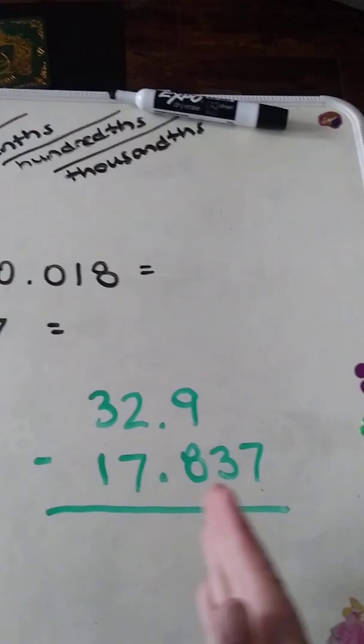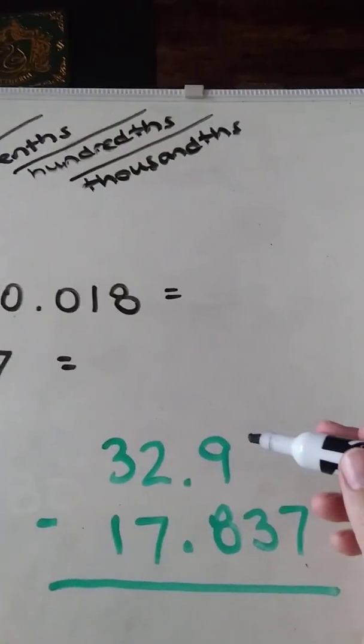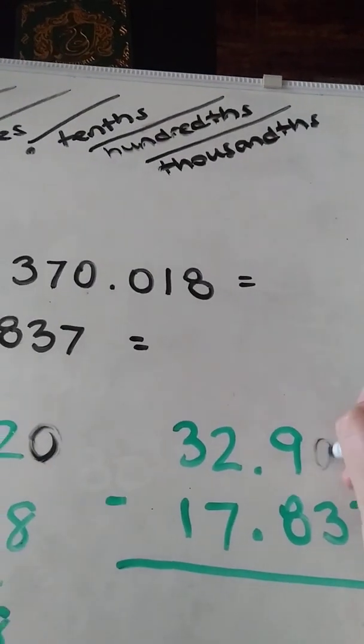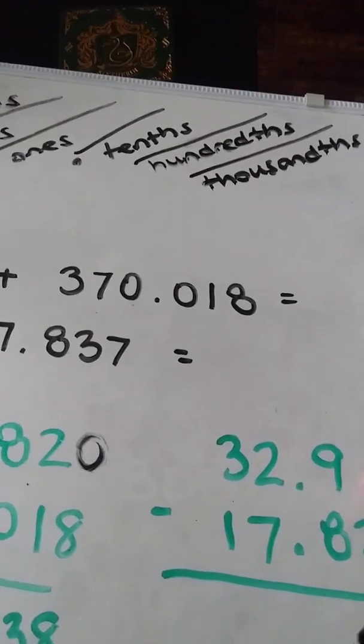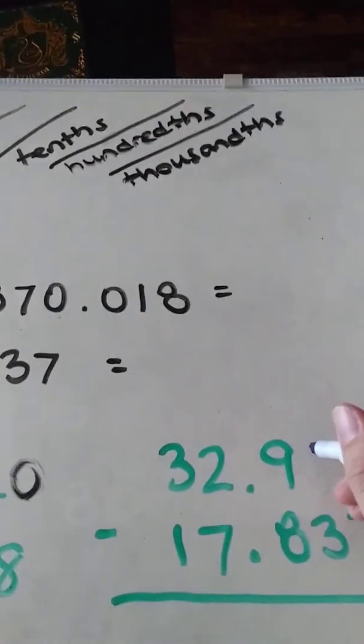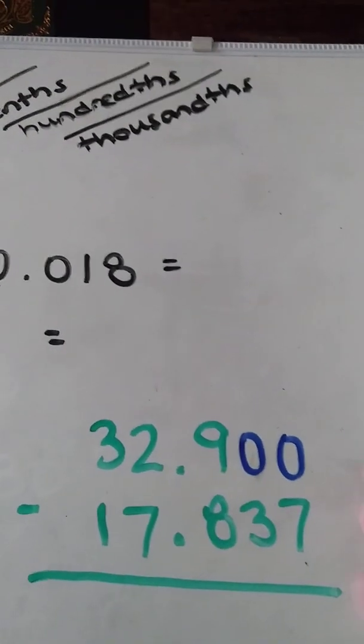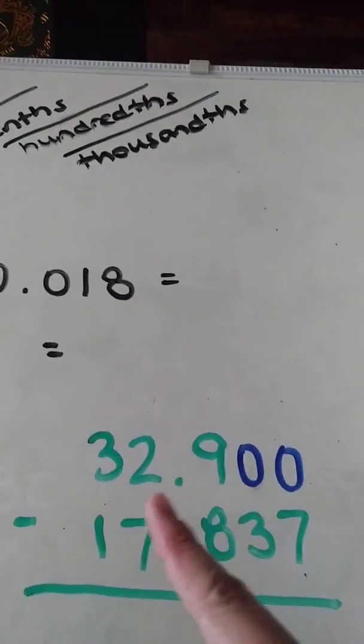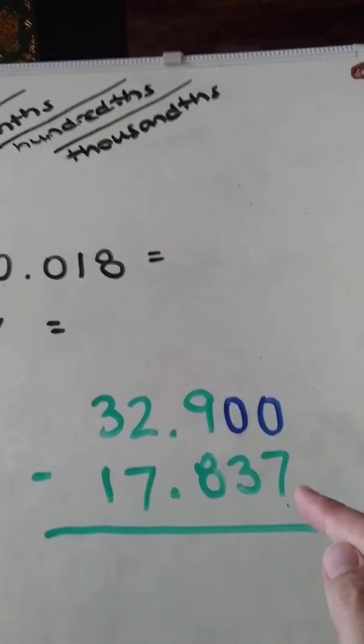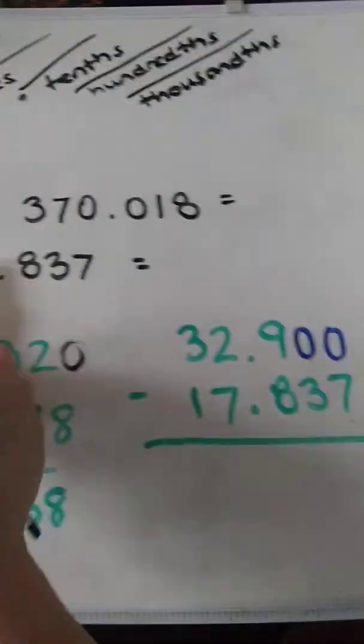That being said, just to make sure I don't forget anything, I'm going to put the zeros at the end of my number here. Again, it doesn't change anything, but it helps me line it up a little bit better. I'm losing my marker. Hold on a second. Let's get a different color. There we go. So again, didn't change the value. Now I have 32 and 900 thousandths, 17 and 837 thousandths, and it just helps me to see the number a bit better. So here I go with my subtraction.